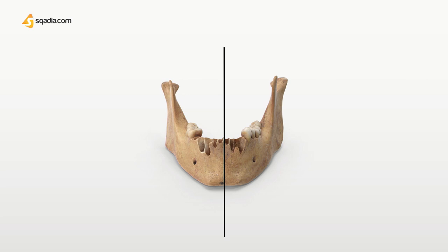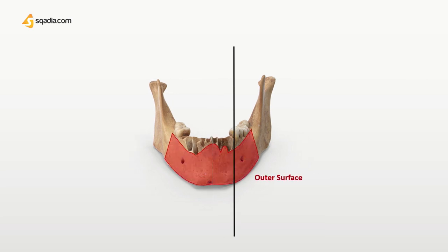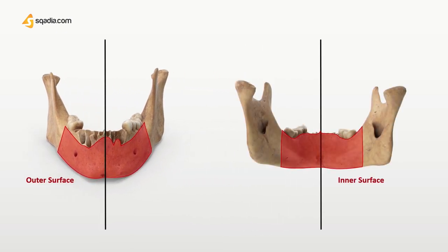Starting with the body of the mandible — this part forms the lower jaw line. Let's simplify things for better memory. Remember the formula of two: two surfaces and two borders. Each half of the body has two surfaces — outer and inner — and two borders — upper and lower.